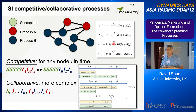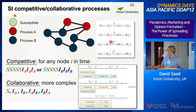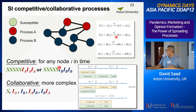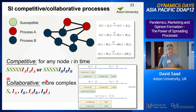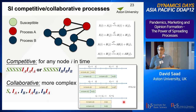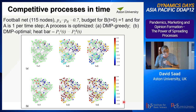We did this for SI competitive or collaborative processes. Nodes can be susceptible, undergo process A, or process B, with different probabilities of infection. The competitive case is not so difficult because you decide whether a node transforms from S to I_A or from S to I_B. In collaborative processes it is more complex — a node can move from S to I_A or I_B, then from I_A to I_B or from I_B to I_A, each with different probabilities. There is a careful set of equations describing the different orders of infection and how they impact the development of the system.